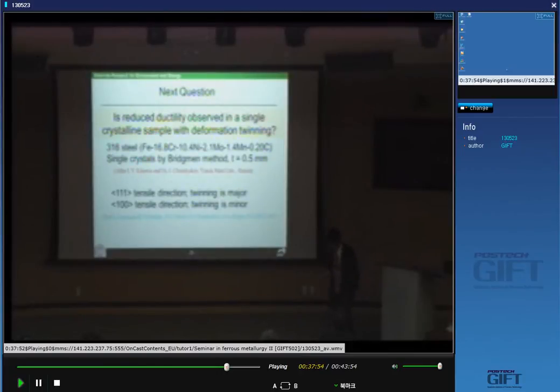The result is like this. Because of twinning, marked twinning, the 111 orientation shows higher yield stress and higher work hardening rate than 100 orientation.